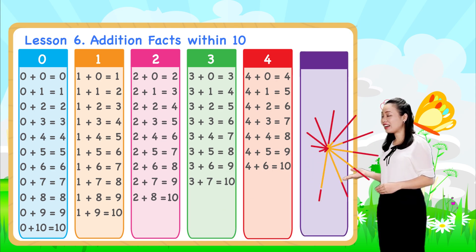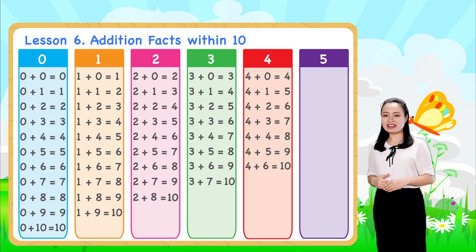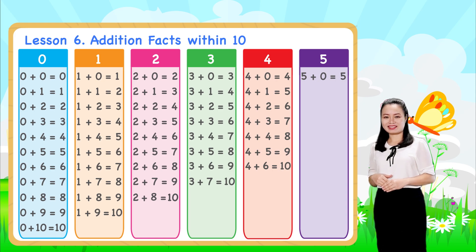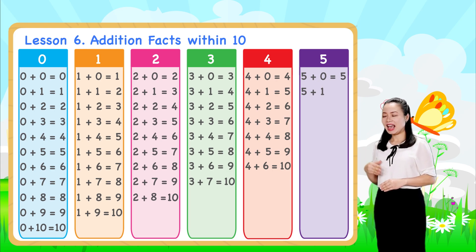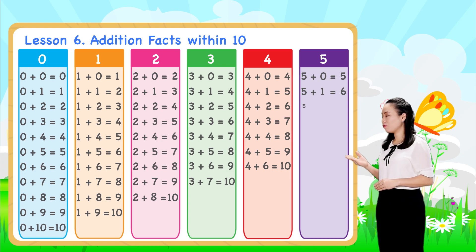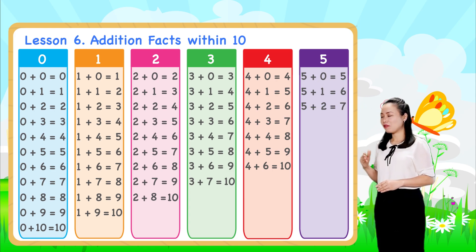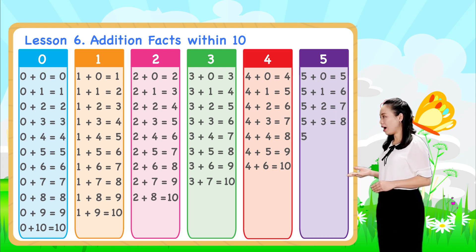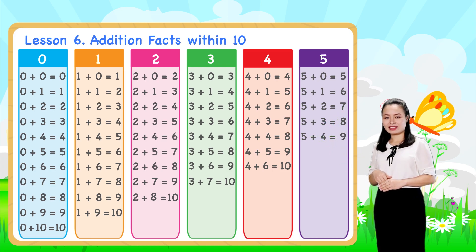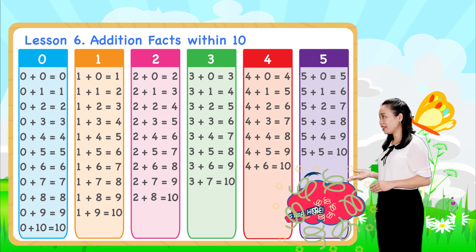Next, look at the fives table. We already learned five plus zero equals five. Let's continue. Five plus one equals six. Five plus two equals seven. Five plus three equals eight. Five plus four equals nine. Five plus five equals ten. We'll stop here for now.